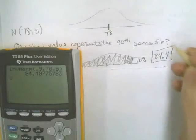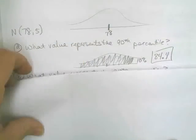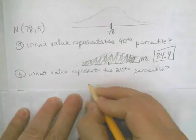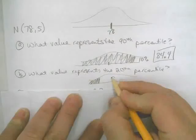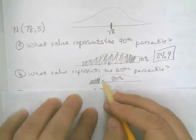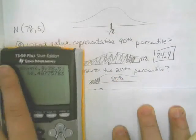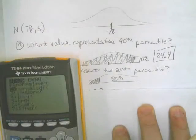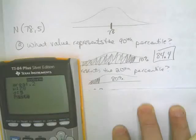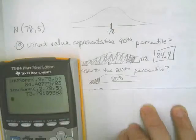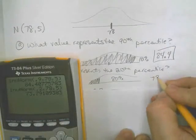If we look at the next one — what represents the 20th percentile? Here 20% is on the left and 80% is on the right. We're trying to find the low 20% cutoff. Going to second distribution, Inverse Norm, the area is 0.20, mean and standard deviation are the same. The cutoff number for the 20th percentile is 73.79, which I'd round to 73.8.